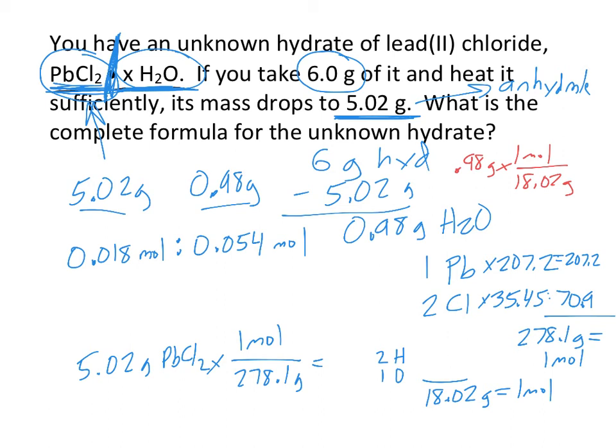So what is the ratio between these? Remember, the final ratio, you divide each by the smallest number. So if I divide these both by 0.018, I get one to three. So that means there's one PbCl2, which is really what we want, for every three waters.